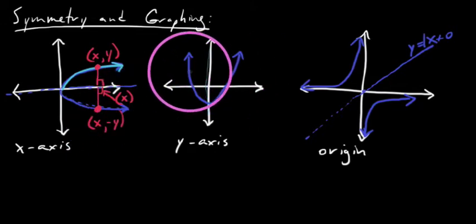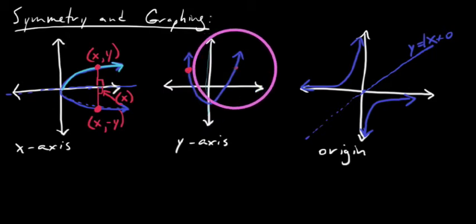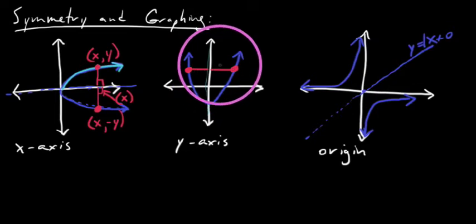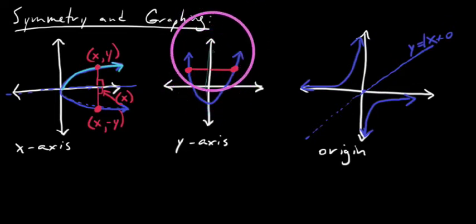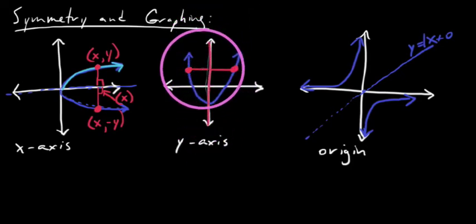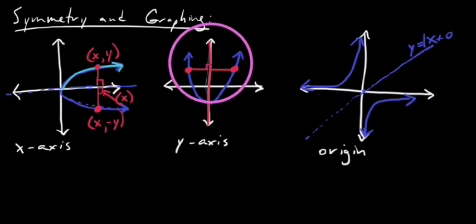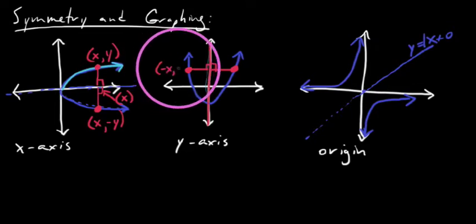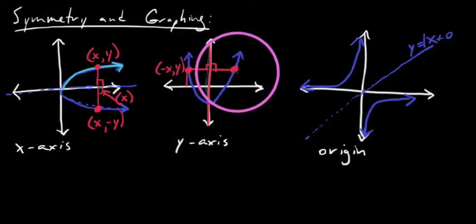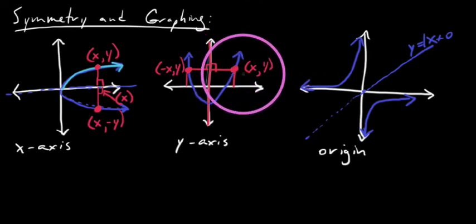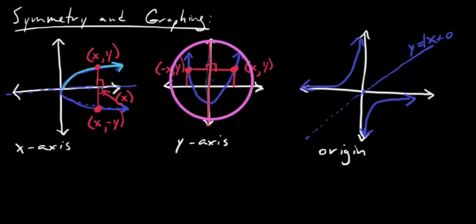The same can be said about a graph that exhibits Y-axis symmetry. If we find the distance back to the line of symmetry — the Y-axis, where all X-values equal zero — there would be a mirror image on either side. Given this negative X-value, it goes to a positive Y-value. But if I gave you the positive X-value, it would also proceed to that same positive Y-value — a mirror image reflection about the Y-axis.